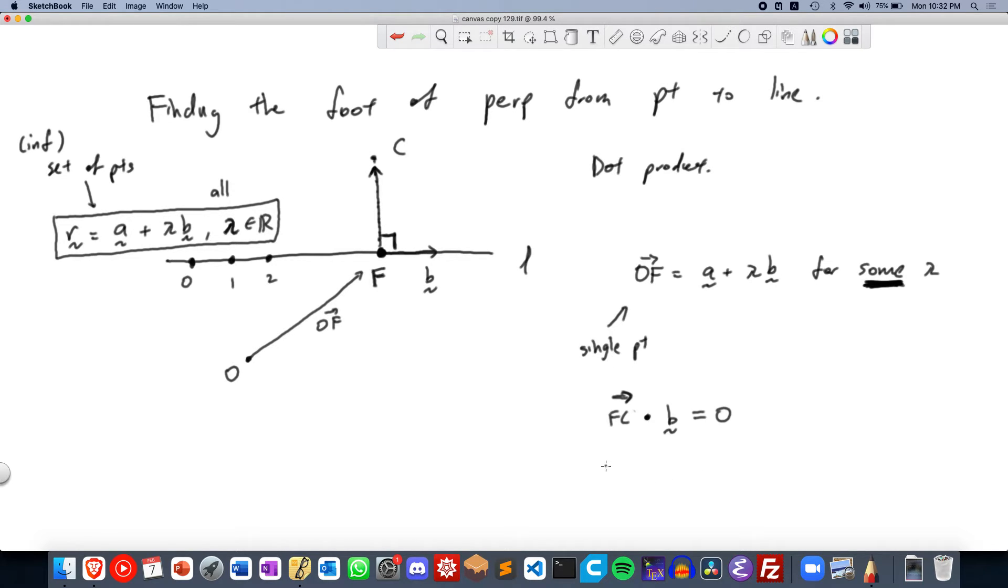So we rewrite this, right, we know that FC equals to OC minus OF. So OC minus OF dot B equals to 0.